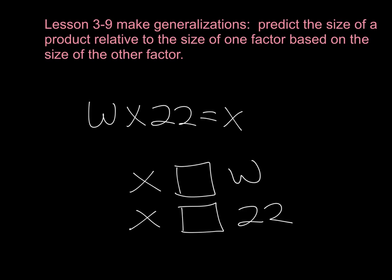Hopefully you predicted that x would likely be greater than w, and it would also likely be greater than 22. If I replace w with any whole number other than 1 — for instance 2 — my product would be 44, and the product would be greater than w as well as greater than 22. So when you're multiplying whole numbers, your product is going to be greater than both of your factors.